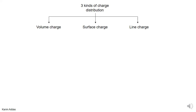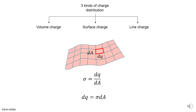In this slide we want to discuss surface charge — charge distributed over a surface. For instance, imagine you have some kind of surface; it doesn't have to be in a plane, it could be any three-dimensional surface. We can define the charge per unit area, sigma, to be dQ by dA, which means that dQ equals sigma dA for a small element of area.